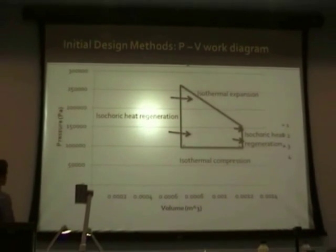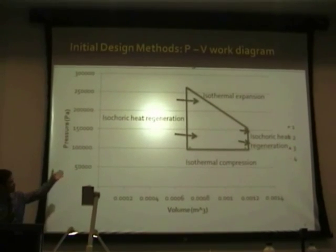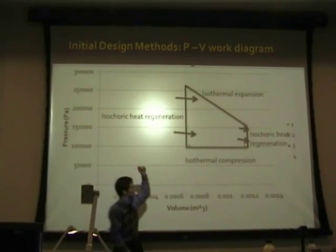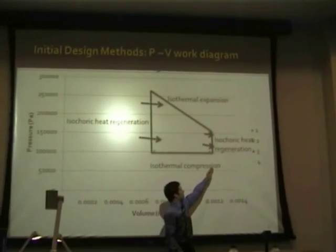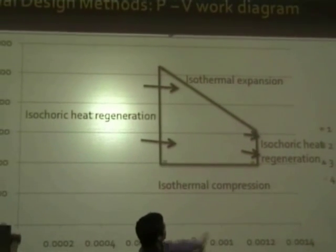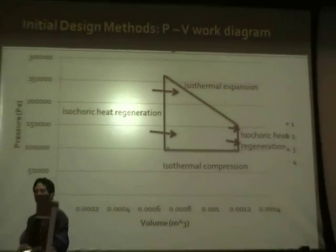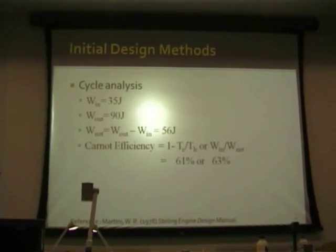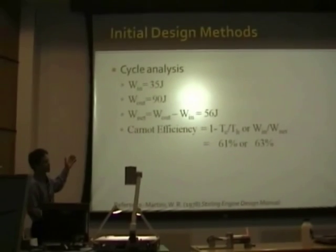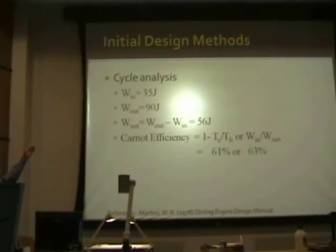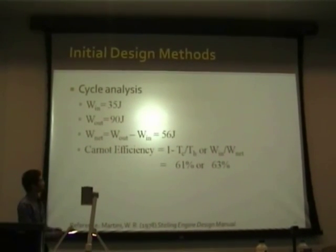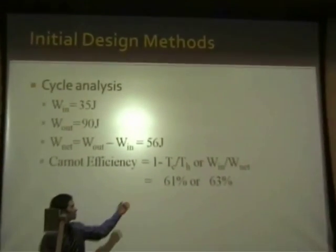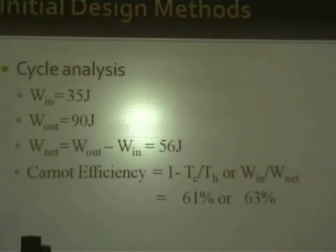Starting with the Stirling cycle: a very basic PV work diagram. You can see the iso-choric heat addition through regeneration, iso-choric heat rejection through regeneration, and iso-thermal compression and expansion — a very simplified workout of the Stirling cycle. Analyzing that cycle, we can determine performance characteristics in terms of work in and work out. The Carnot efficiency based on temperatures is 61%, and efficiency based on work is 63%.